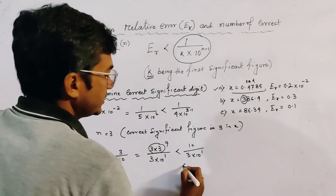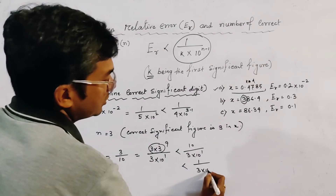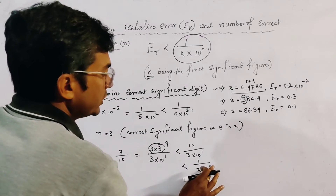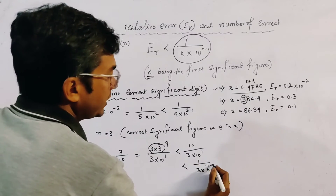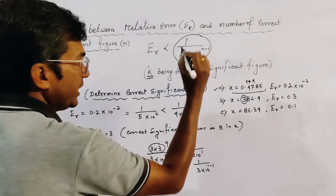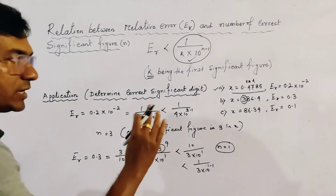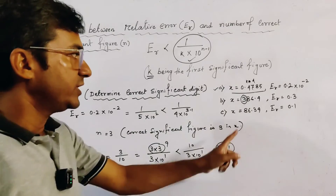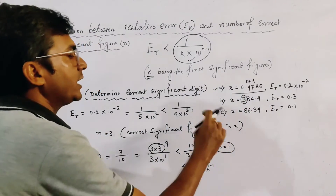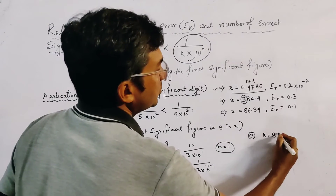So we get 1 divided by 3 times 10 to the power 0, and since 10 to the power 0 means n minus 1 = 0, comparing with the formula gives n equal to 1. So 1 is the correct number of significant figures for problem number 2.